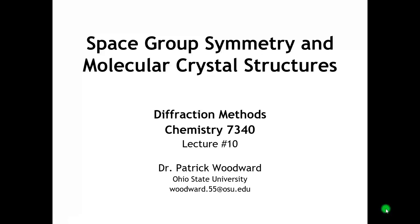In the previous lecture, we considered the implications of space group symmetry on the structures of extended solids: intermetallics, ionic compounds, covalent network solids. In those types of crystals, we saw that there is oftentimes quite high space group symmetry, which places certain restrictions on where the atoms can go within the unit cell. In this lecture, we're going to look at crystals made of molecules — molecular crystal structures — and we're going to see that things look quite different.